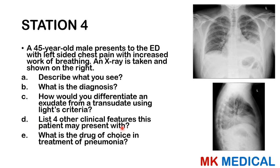Coming to station four: a 45-year-old male presents to the emergency department with left-sided chest pain and increased work of breathing. An X-ray is shown. Describe what you see, what is the diagnosis, how would you differentiate an exudate from a transudate using Light's criteria, list four other clinical features this patient may present with, and what is the drug of choice in treatment of pneumonia?